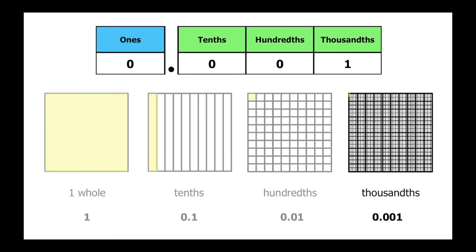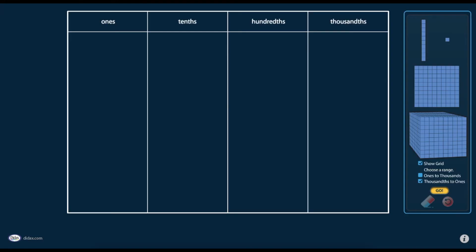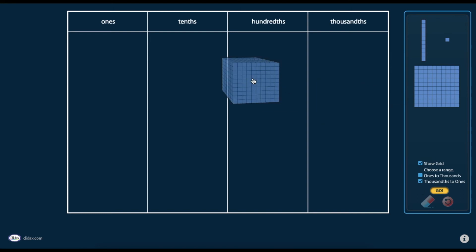Let's take a look at another way we can represent decimals. You've probably used base 10 blocks before to represent numbers, but did you know that you can also use them to represent decimals? First, we have to define what one whole looks like. We'll use the cube to represent one whole or our ones.